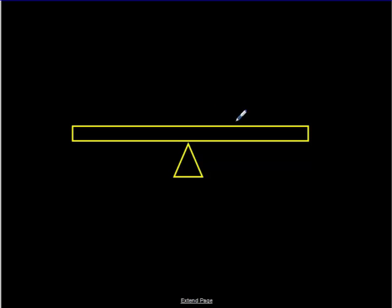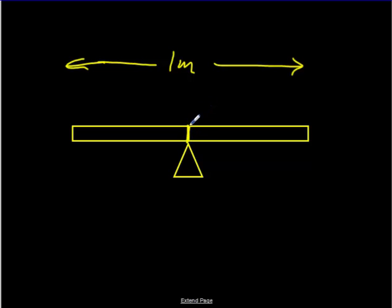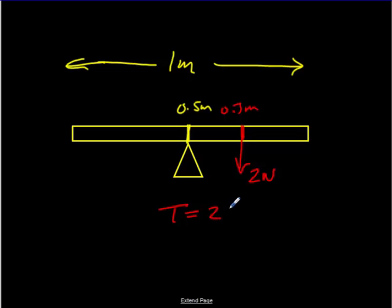Let's look at a sample. Say I have a meter stick, one meter in length. The center of gravity is at the 50 centimeter mark, so 0.5 meters. At the 70 centimeter mark — 0.7 meters — I apply a force of 2 newtons perpendicular. The distance from the pivot point is 0.7 minus 0.5, which is 0.2 meters. So my torque in the clockwise direction is 2 times 0.2, which equals 0.4 newton meters.